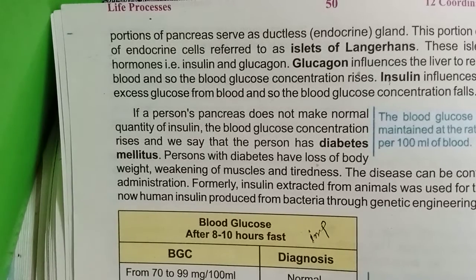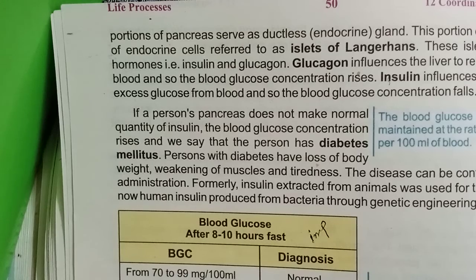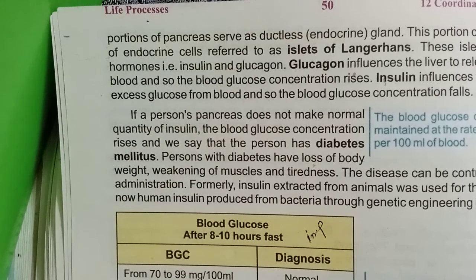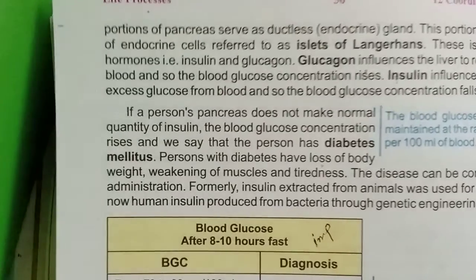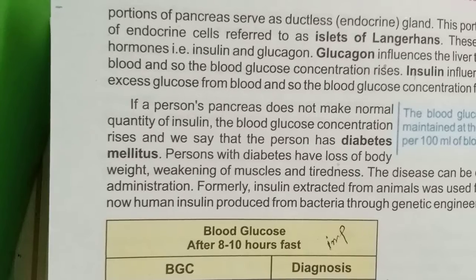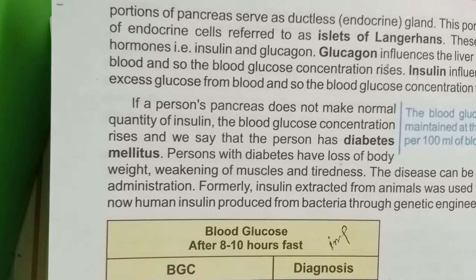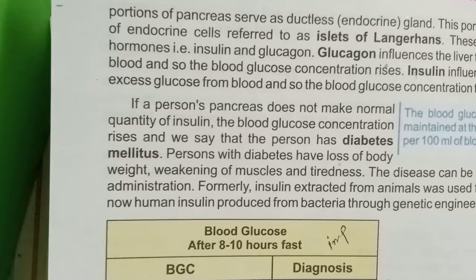The second portion of the pancreas serves as a ductless endocrine gland. This portion is a group of cells called the Islets of Langerhans. This endocrine portion secretes two hormones: glucagon and insulin.